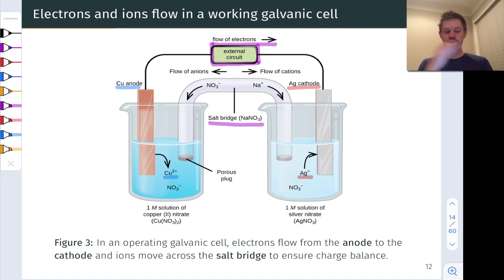Just to summarize, it's important to note that electrons are going to flow from the anode where oxidation occurs to the cathode where reduction occurs. So our net direction of electron flow is from left to right on this diagram through our external circuit.